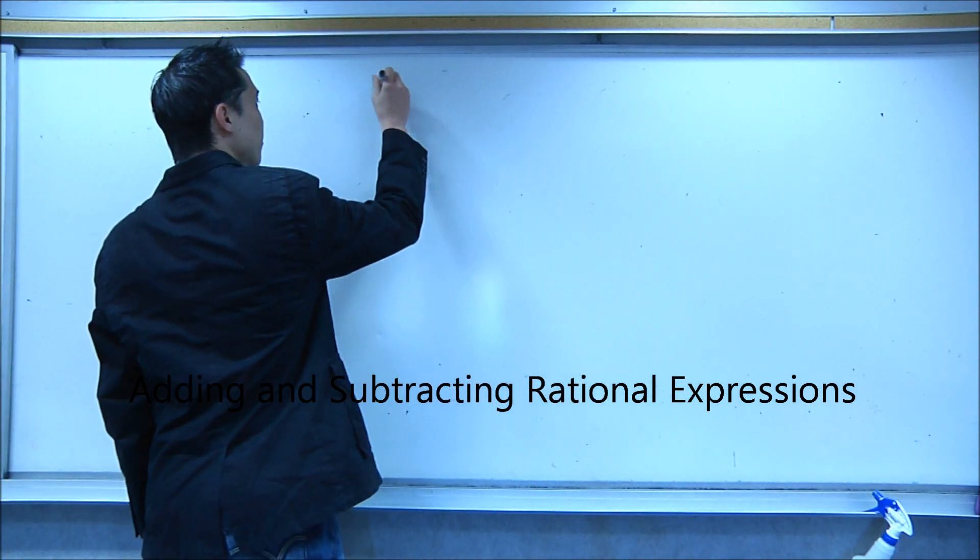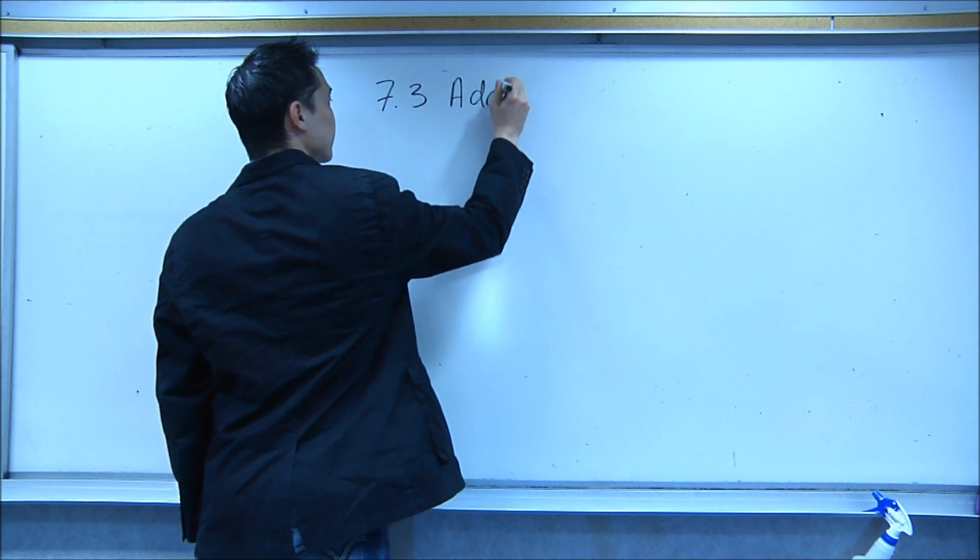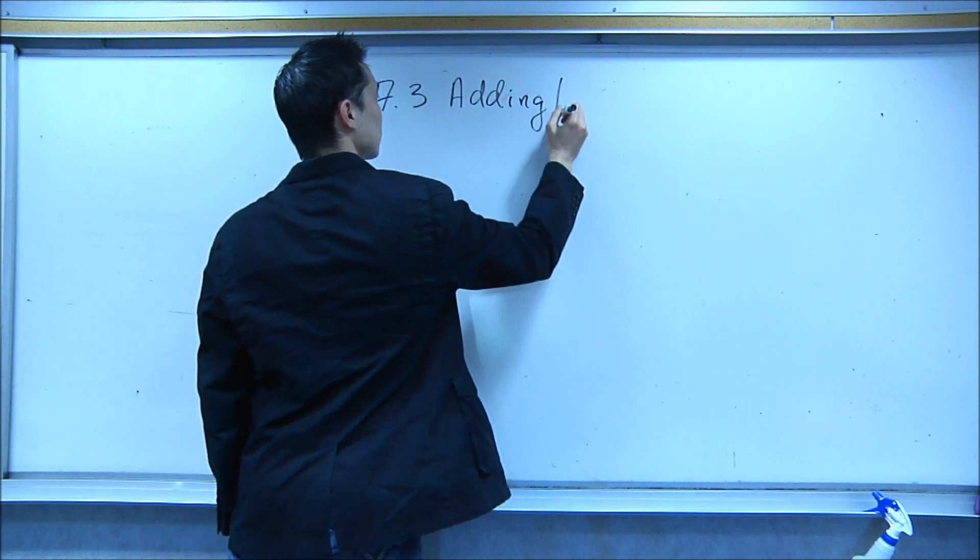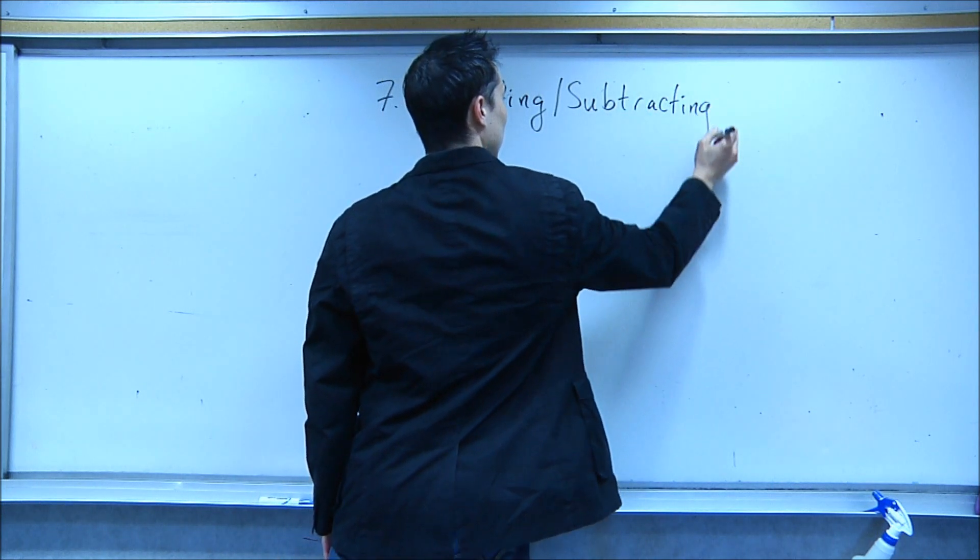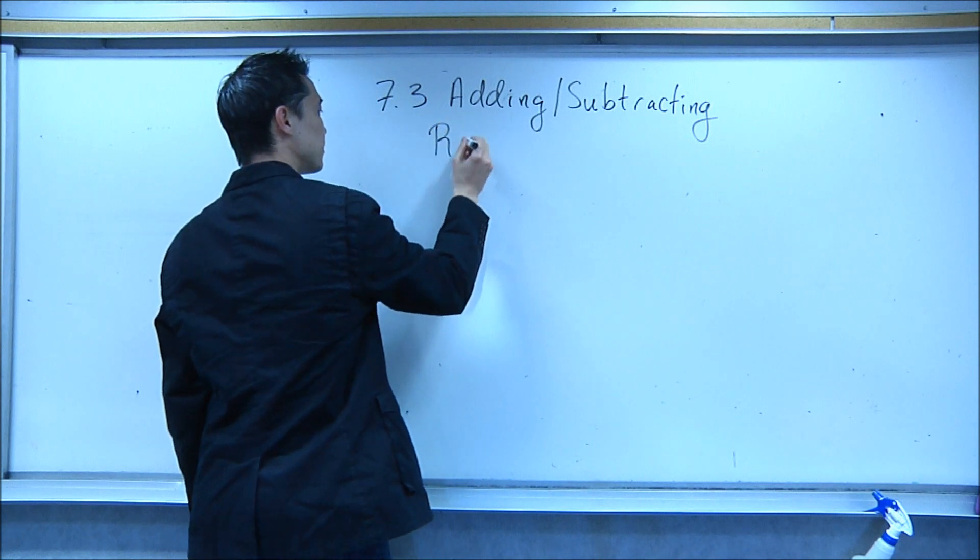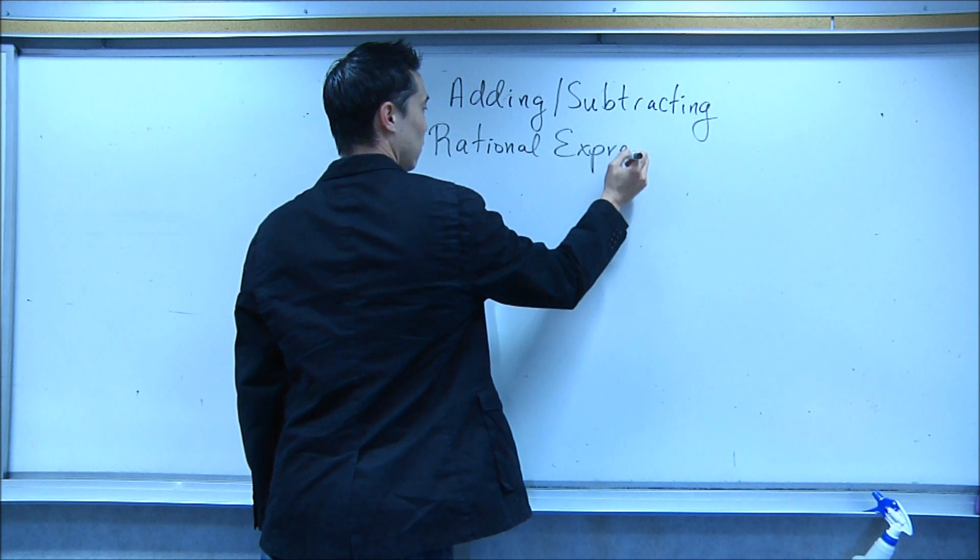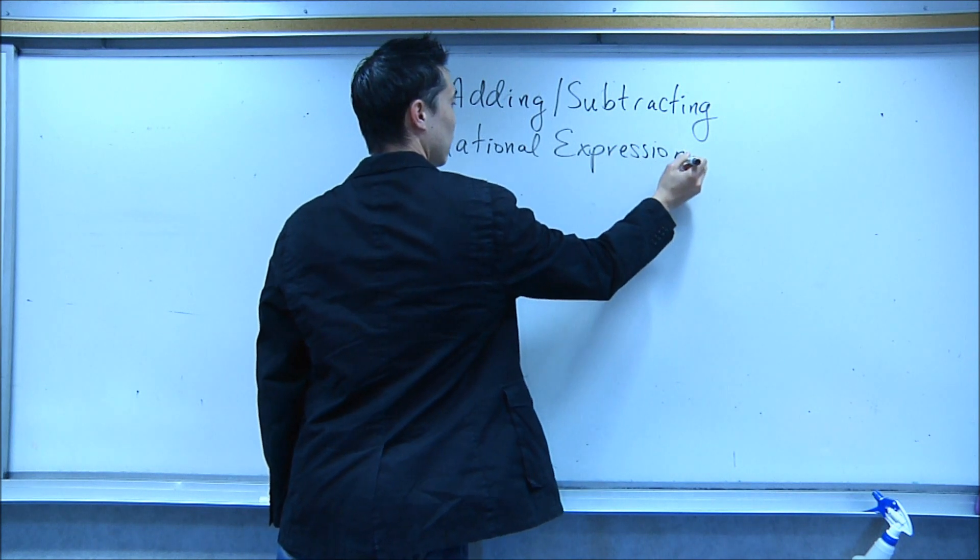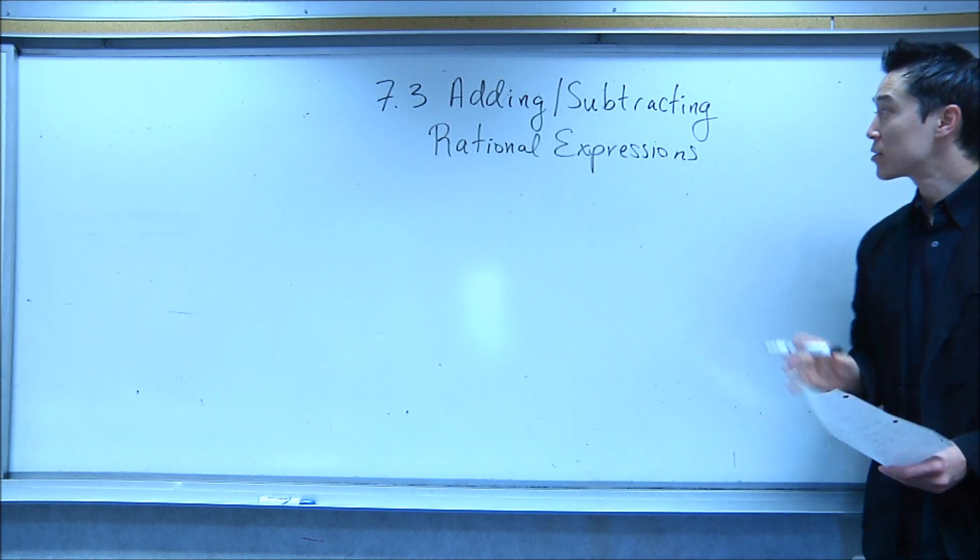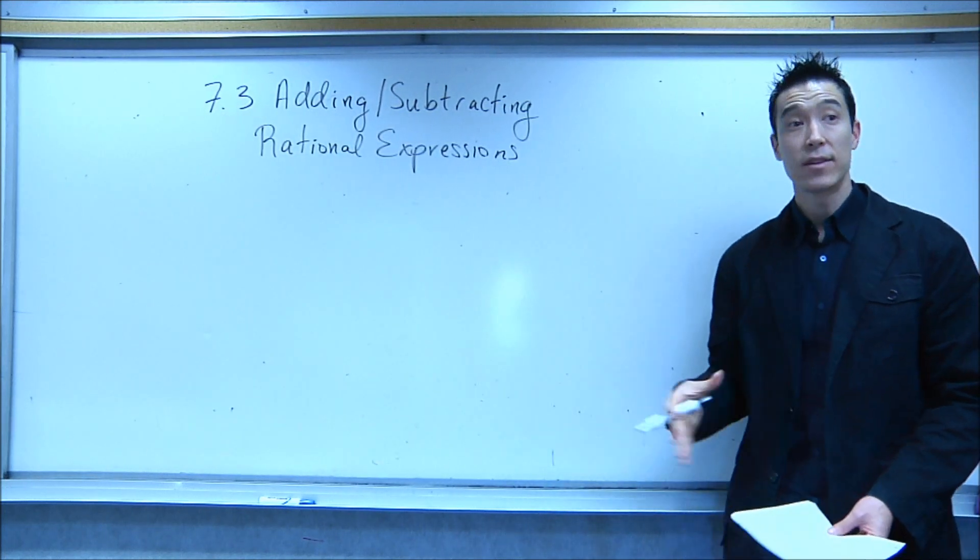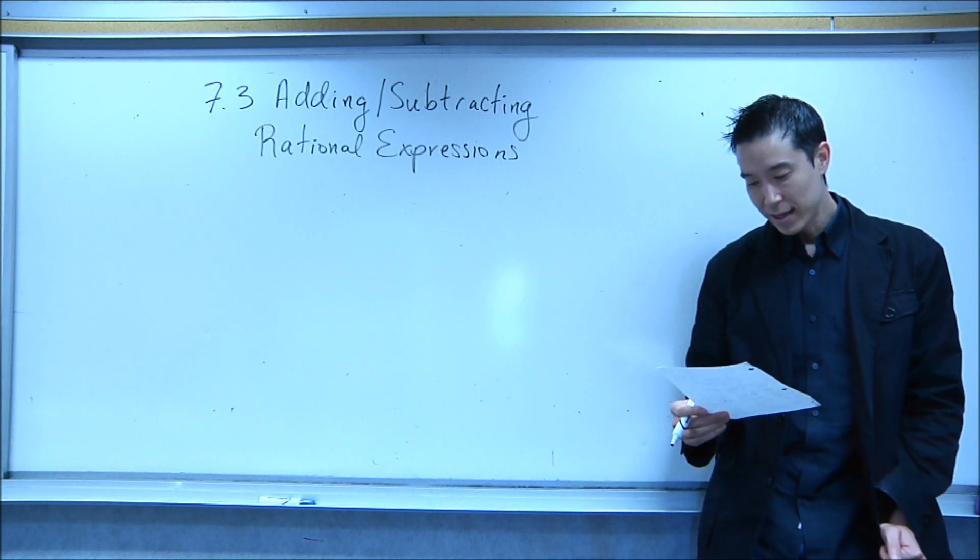Okay, today is 7.3, which is adding and subtracting rational expressions. And the good news is 7.3, all the rational expressions that we'll be adding and subtracting have the same denominator. So that's the easiest case with adding and subtracting fractions.